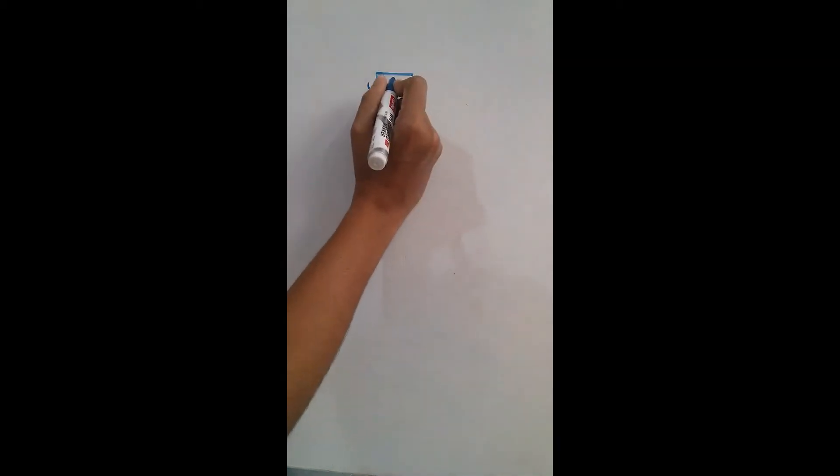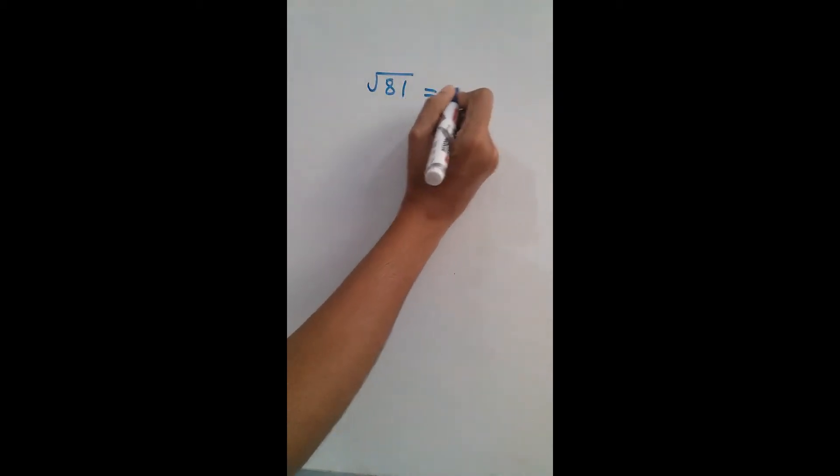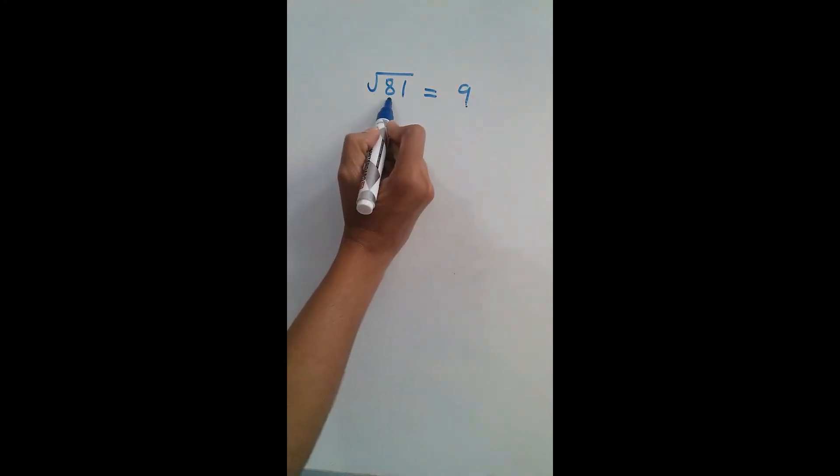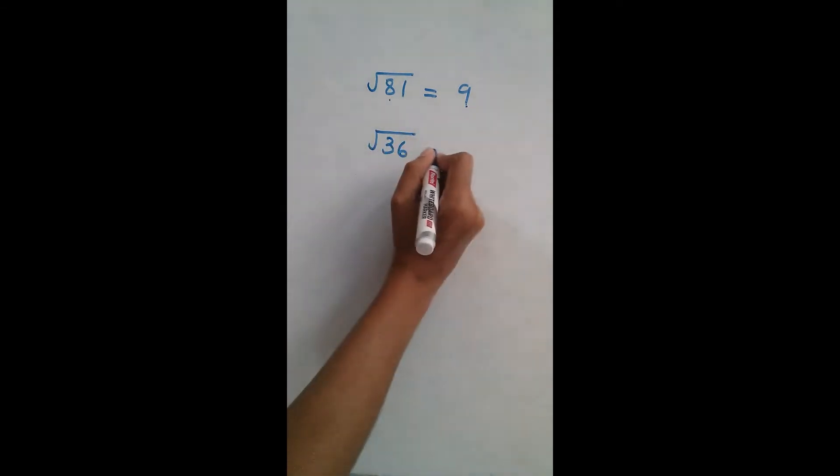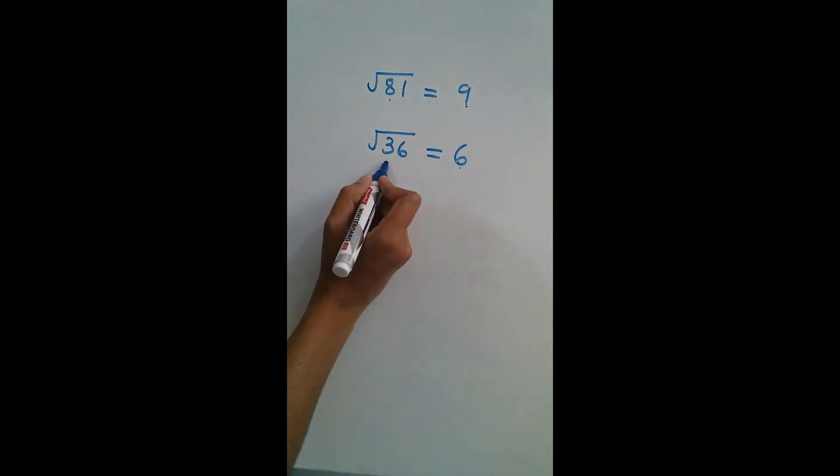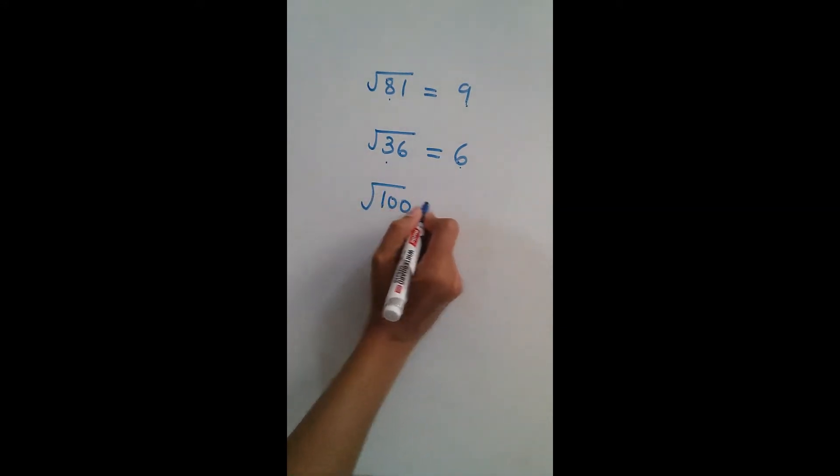We know square root of 81 is 9. That is, if we multiply 9 two times, 9 into 9, then we are getting 81. Similarly, square root of 36 is 6. That is, if we multiply 6 two times, 6 into 6, then we are getting 36. For 100, it is 10.